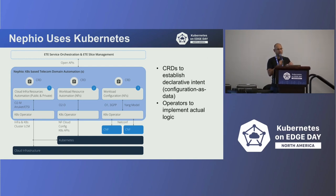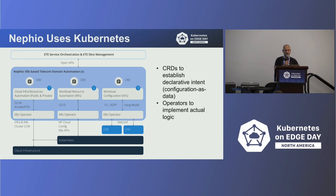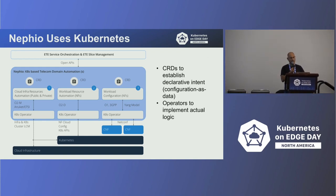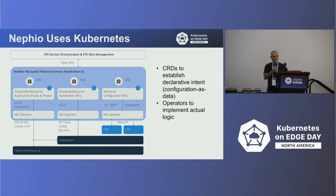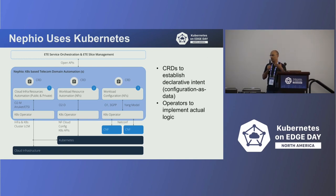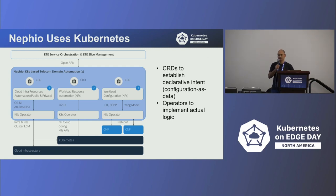The three custom resource buckets are: first, cloud infrastructure resource automation, which deals with the infrastructure layer; second, workload resource automation for network functions or edge computing applications; and third, workload configuration, which configures your network functions or edge computing applications using whatever protocol is required — Yang/Netconf for network functions, or REST for edge computing applications.